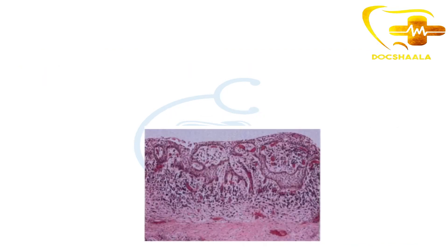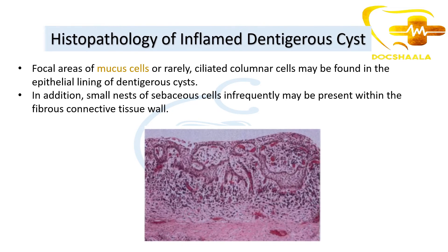Focal areas of mucous cells or rarely ciliated columnar cells may also be found in the epithelial lining. In addition, small nests of sebaceous cells infrequently may be present within the connective tissue.